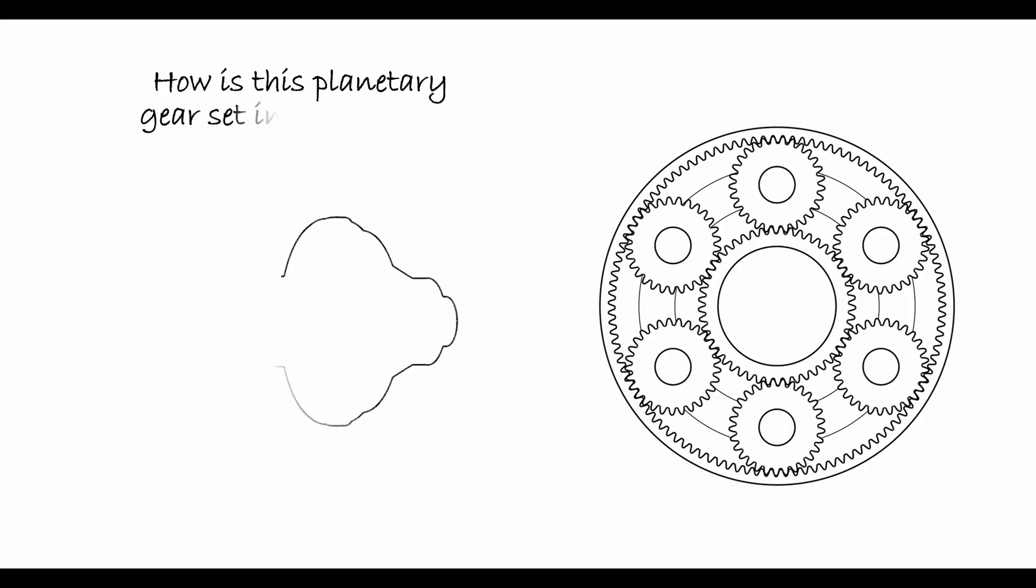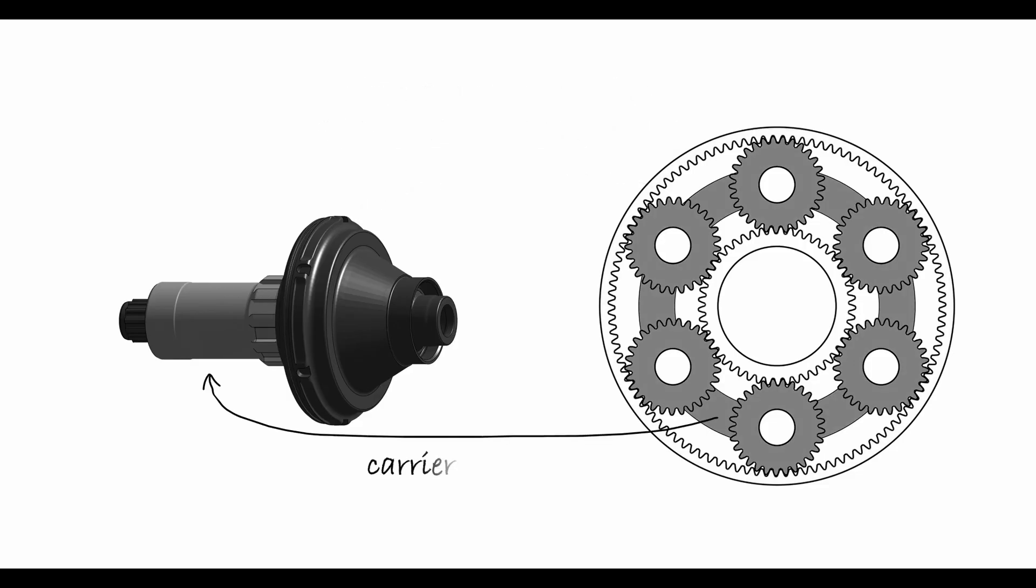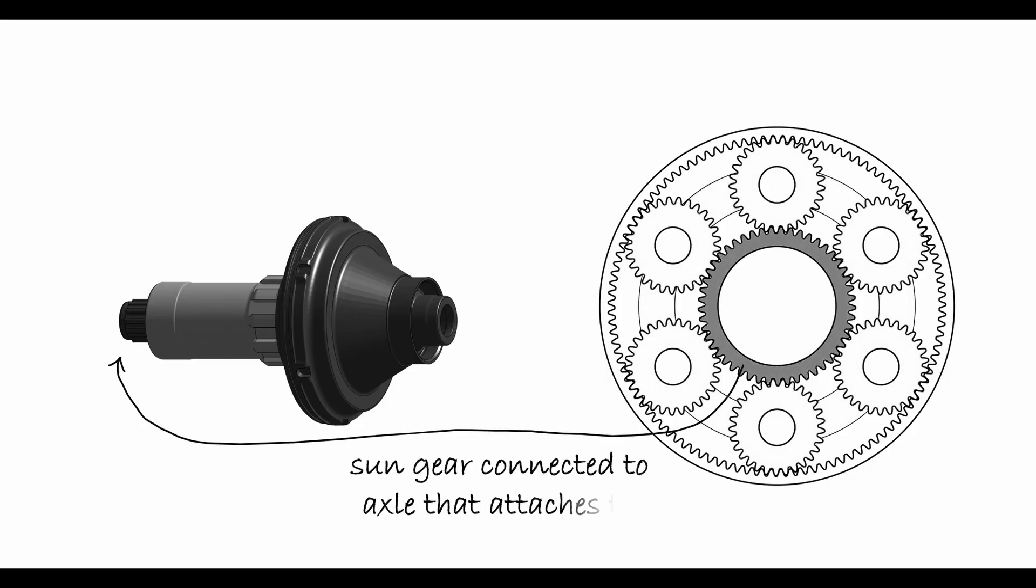Now, how is this planetary gear set actually integrated into the PowerShift Hub? The ring gear is connected to the so-called driver of the hub, which holds the cassette. The planet carrier is connected to the so-called hub shell that holds the rear wheel of the bicycle. And finally, the sun gear is connected to the hub's axle that mounts into the frame of the bicycle.